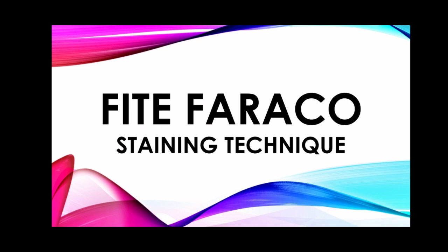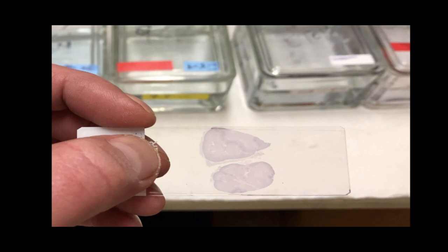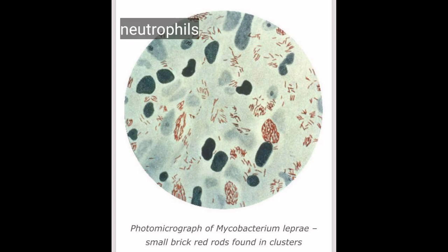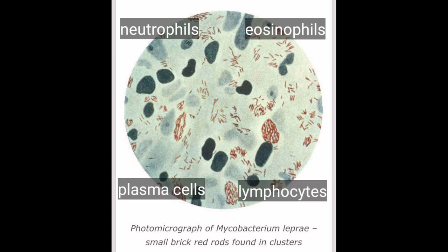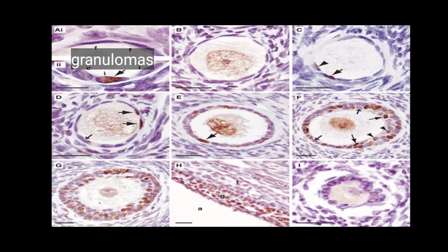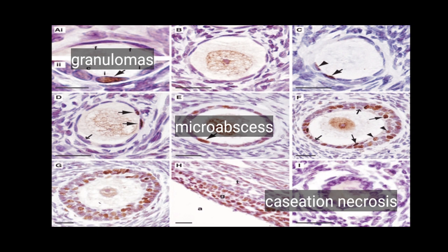Good day, class. For our laboratory activity, we have Phyth-Faraco staining technique. We all know that the microscopic appearance of routinely stained tissue may reveal infection, as evidenced by the presence of inflammatory infiltrates such as neutrophils, eosinophils, plasma cells, or lymphocytes. There will also be granulomas, micro-abscesses, or caseation necrosis in the section being examined.